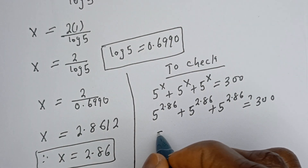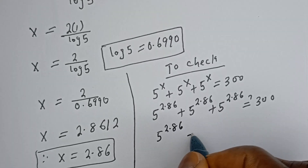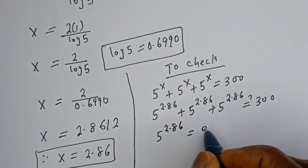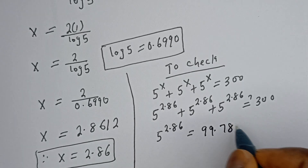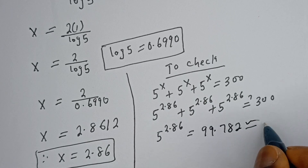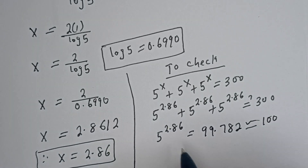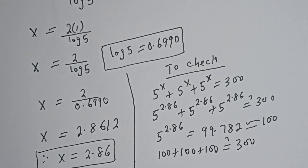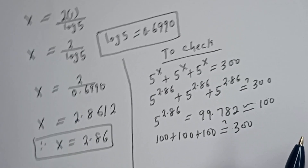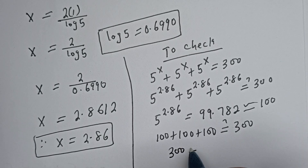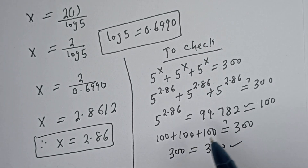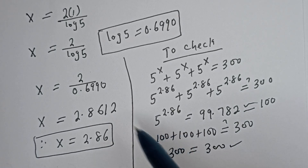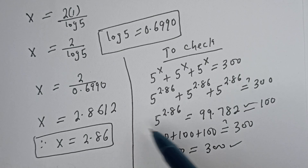5 to the power of 2.86 is equal to 99.782, which is approximately 100. Therefore we have 100 plus 100 plus 100 must be equal to 300. Now let's add together: 100 plus 100 is 200, plus 100 is 300. Therefore the left-hand side 300 is equal to the right-hand side 300, which is true. I hope you enjoyed the video. Thank you for watching — please don't forget to like, share, comment, and subscribe to my channel. Bye bye.